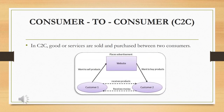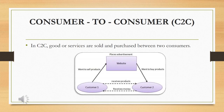The next category is consumer to consumer — C2C business. This type of business occurs between two customers only. One customer wants to sell their assets or products and another wants to buy from them. The seller can publish information or place advertisements on a website like OLX, and the buyer can view the advertisements and contact the seller directly. After finalizing, one customer sells the product and the other pays money for it. Some websites may charge the consumer for their services, but some may not — it depends on the website.